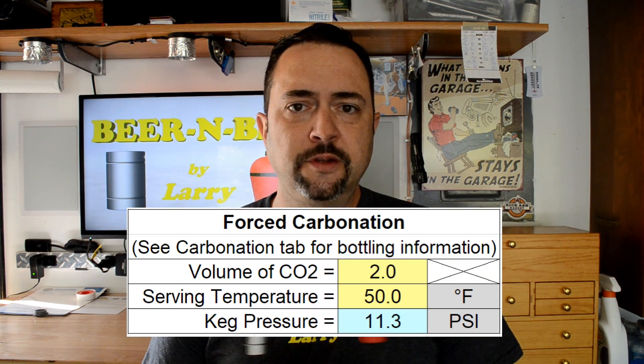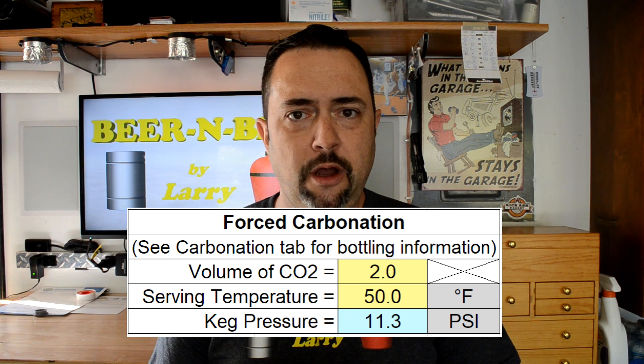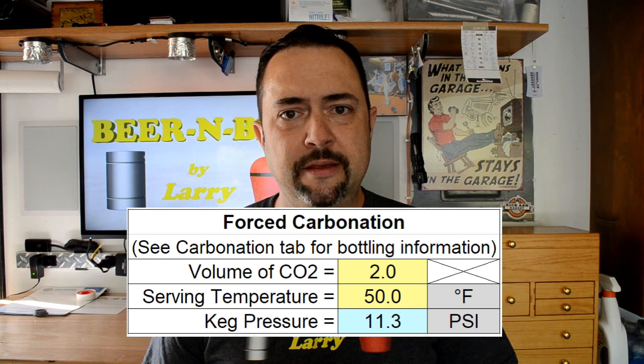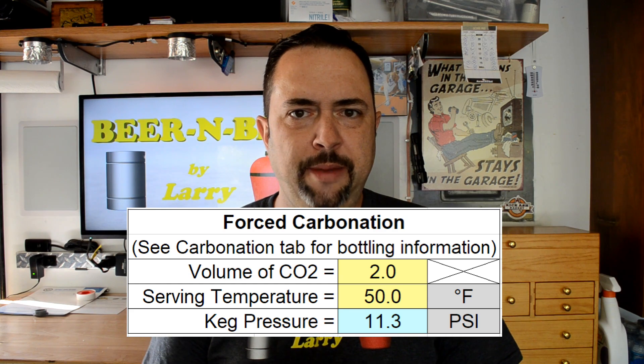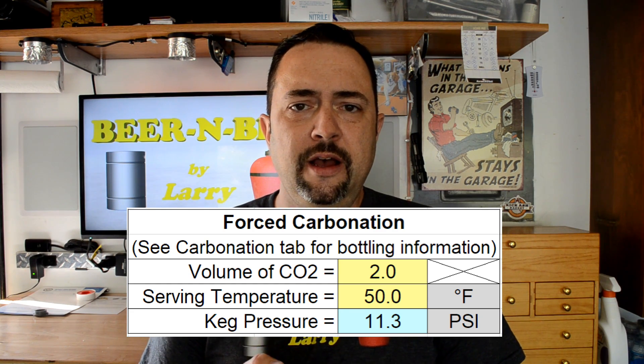Another enhancement I added was a force carbonation field on the recipe sheet to calculate the PSI — or bar or kilopascal for metric folks — for your keg. I've gotten a lot of questions on my channel about what pressure to set their keg to for certain beers. I kind of left that to personal preference before. I generally use 10 to 12 PSI for most of my recipes.